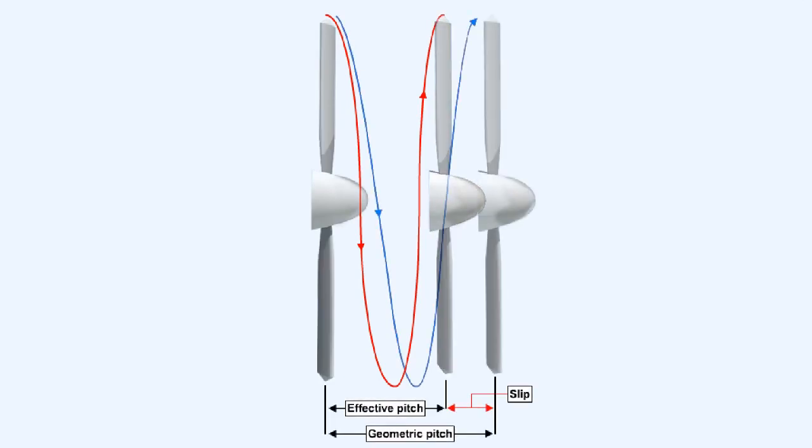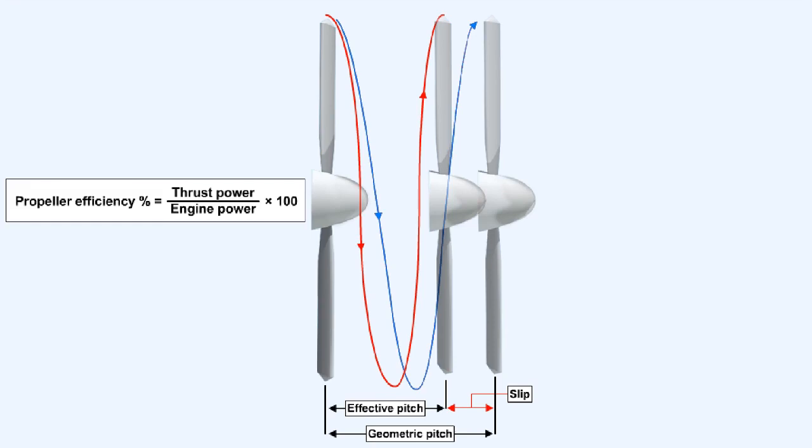The efficiency loss, that is, the difference between geometric pitch and effective pitch, is known as slip. The efficiency achieved will usually be in the range of 80 to 90% and can be found by using this formula.